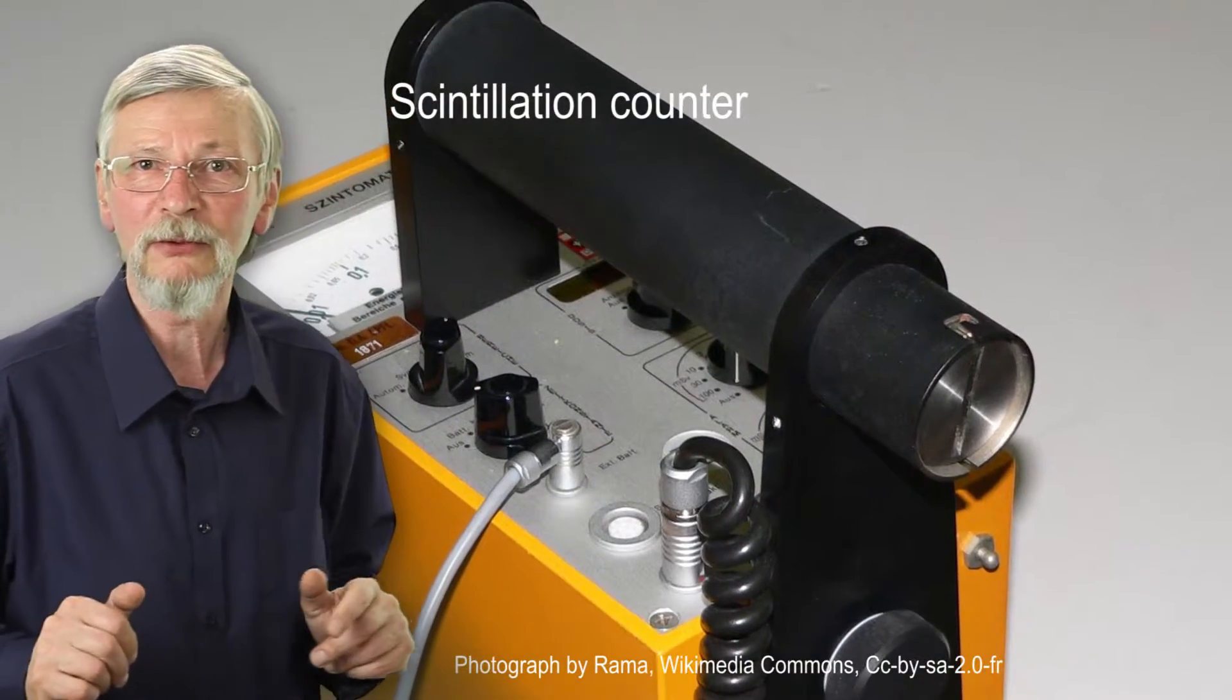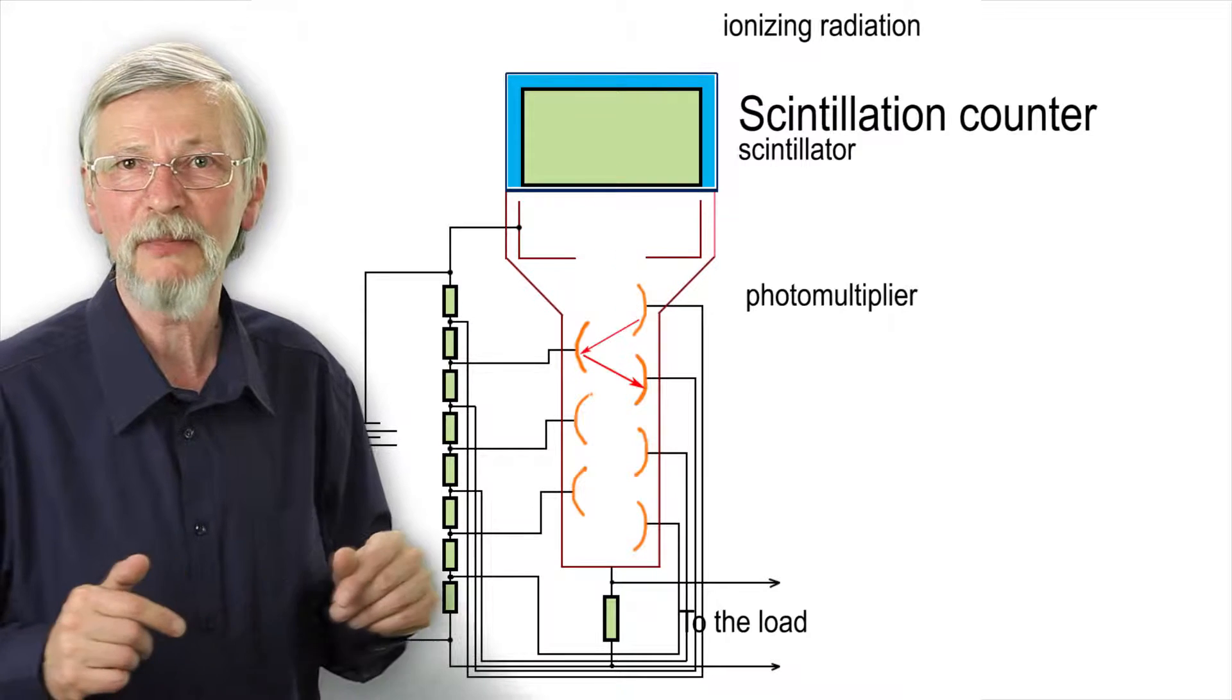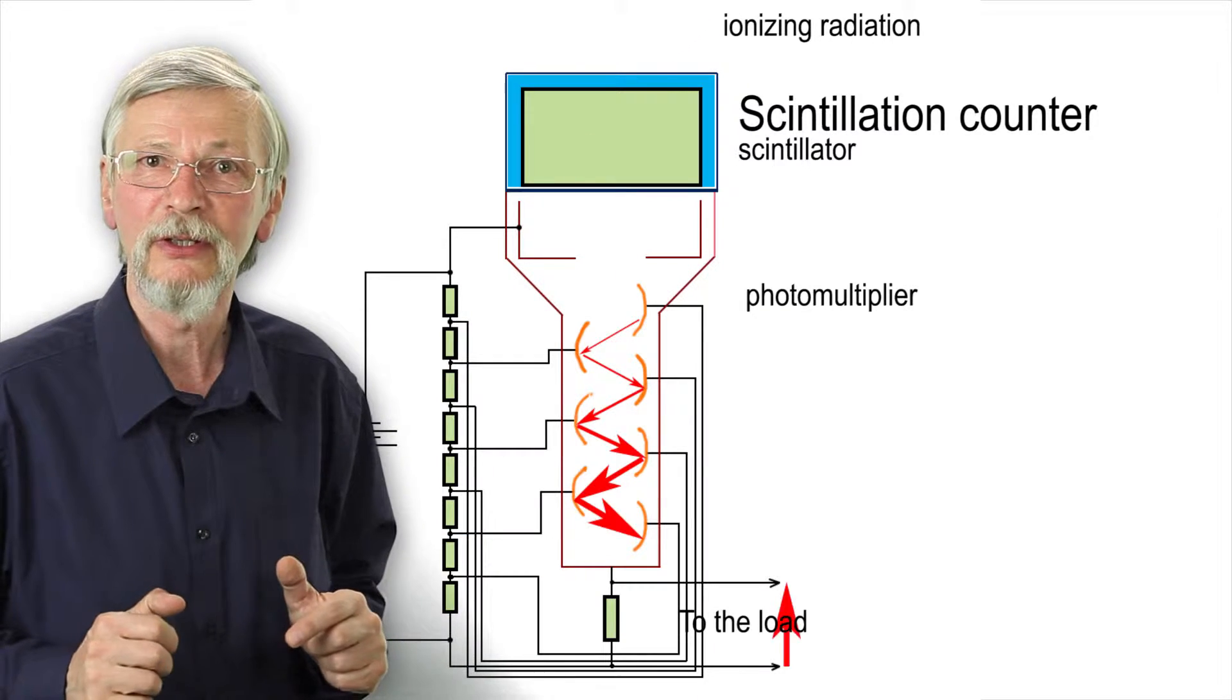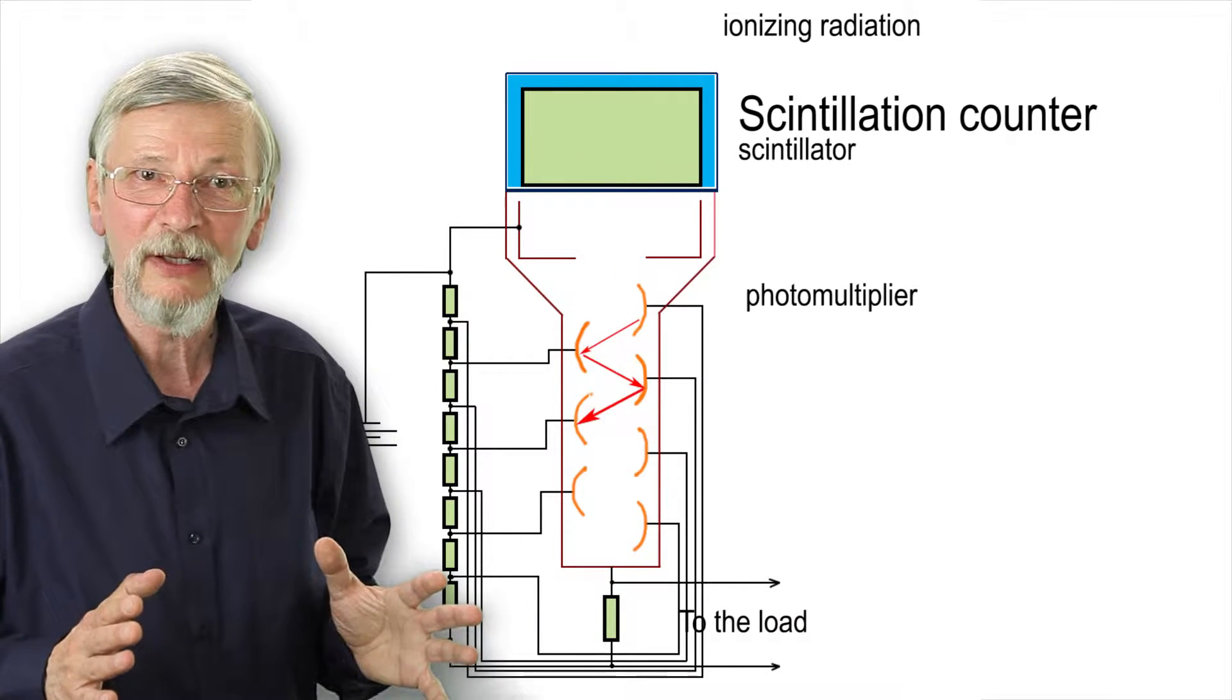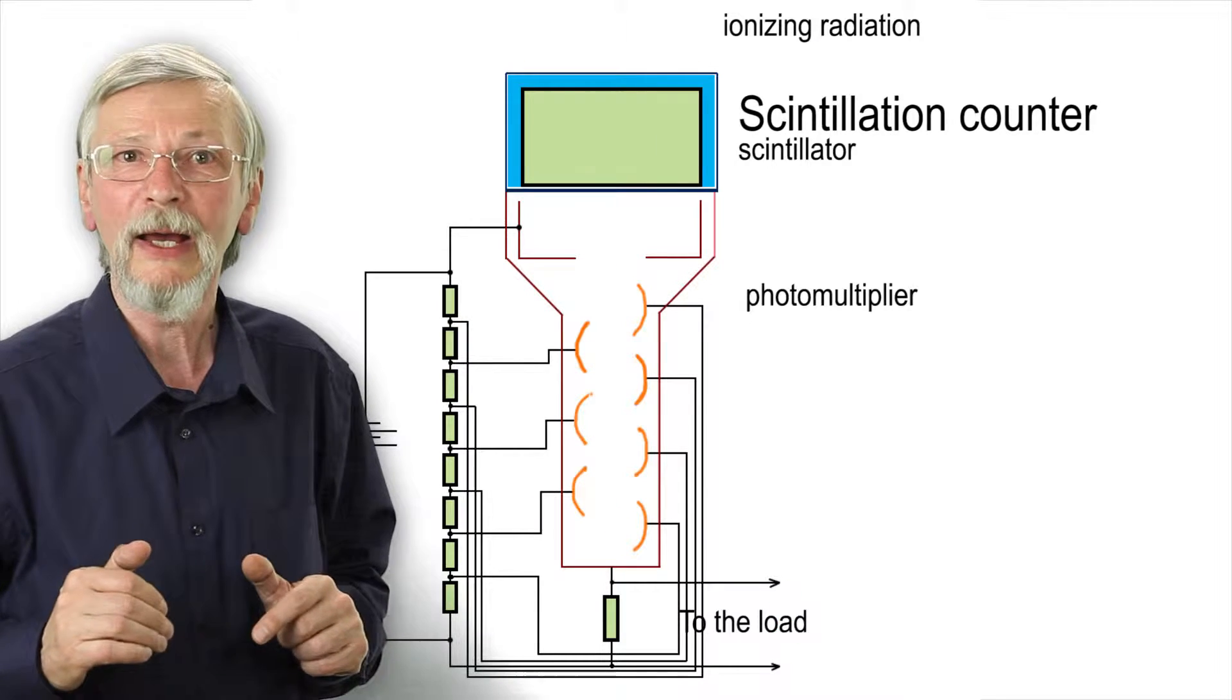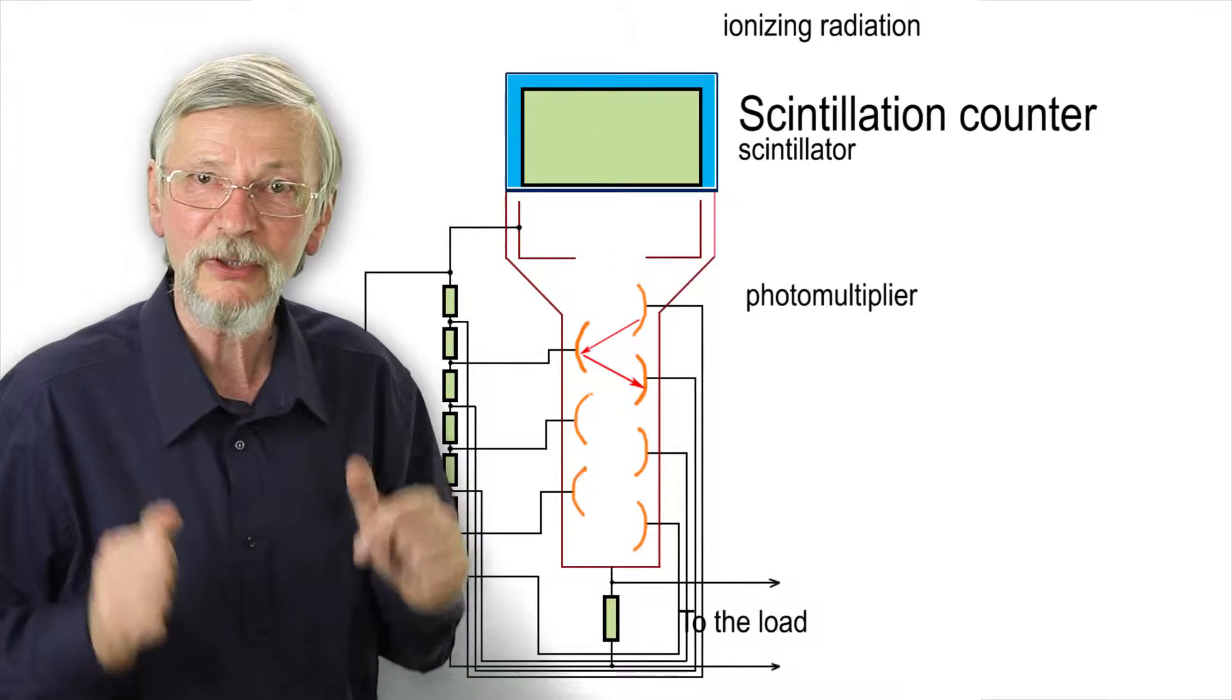In addition to Geiger counters, scintillation counters and proportional counters are used because they allow to determine which type of radiation is being measured more easily. Scintillation counters can detect alpha, beta, and gamma radiation. They use a scintillator that converts the energy of the radioactive particles into light, hence the name of the counter. The light, in turn, is converted into an electrical signal in a sensitive photomultiplier and then measured. The area of detection is larger than for the Geiger counter, which allows for more efficient detection.